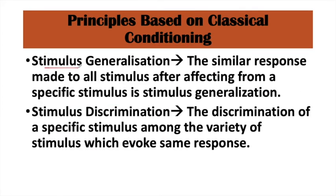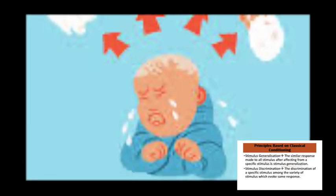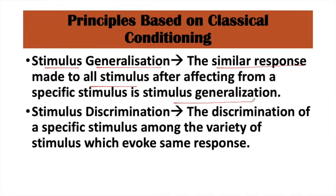The next principle is stimulus generalization — a similar response is made to all stimuli. With the dog, the natural stimulus was food and the artificial stimulus was the bell. But the dog also responded to lightning and the attendant's footsteps in the same way. Everybody — every similar stimulus — gets the same response. That is called stimulus generalization.